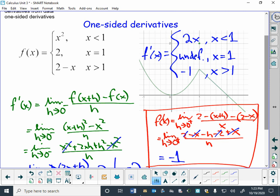But for now I'll mention that the derivative is undefined at 1, it's 2x to the left of 1, and it's negative 1 to the right of 1.